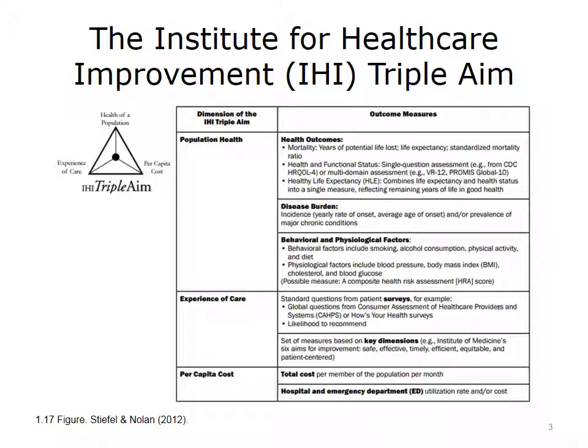One of the reasons that population health has received increased attention in the U.S. over the last five years is that the Institute for Healthcare Improvement, IHI, has made its achievement a top-line mission. This influential Quality Improvement Institute, which most large hospitals and health systems actively participate in, has developed something called the Triple Aim.